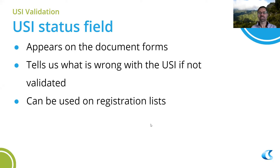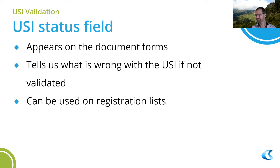There is a USI status field on the documents where we update the status of the USI. It will tell you what's wrong — for example, if the name is wrong, the surname, the date of birth, or the USI itself doesn't match. We do that on the document so we can include it in emails sent out. We can send an email to the student telling them what's wrong with their USI, which is very useful. It can also be included on registration lists to give the trainer an idea so they can troubleshoot with the student.